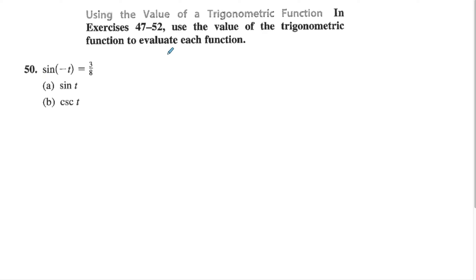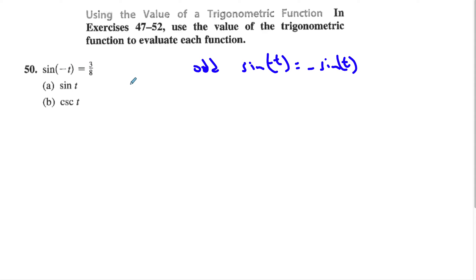Use the value of the trig function to evaluate each function. Sine is an odd function, which means sine(−t) = −sine(t). So if sine(−t) = 3/8, then sine(t) = −3/8. And cosecant, being the reciprocal of sine, would be −8/3.